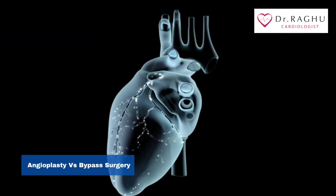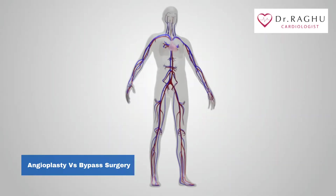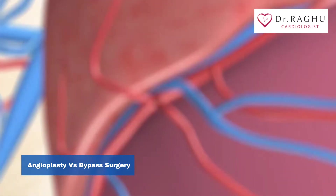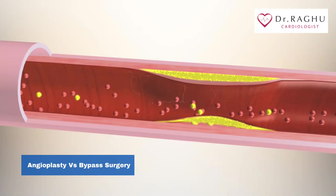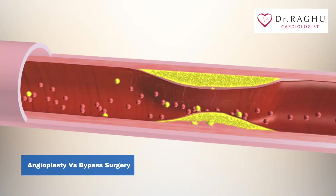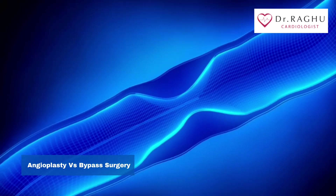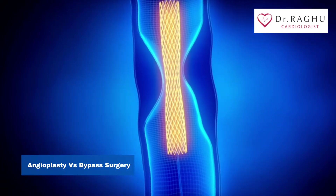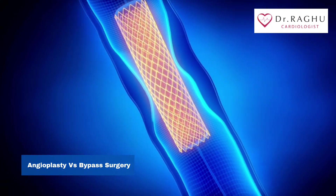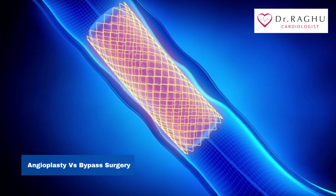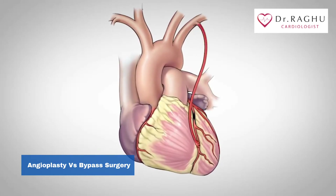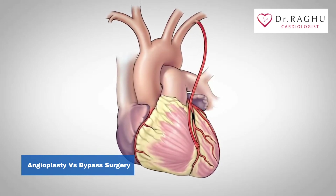Your heart doesn't just pump blood — it needs blood to survive. When blocked coronary arteries threaten the heart's blood supply, something must be done. There are two main approaches: angioplasty plus stenting, and coronary bypass surgery.